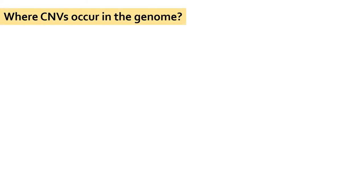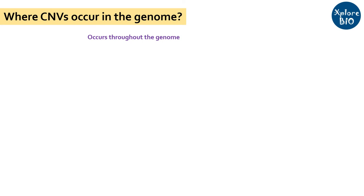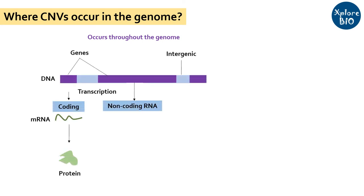Copy number variation can occur anywhere in the genome, in gene coding regions or non-coding regions. Copy number variations are common in immunity and drug detoxification related genes.